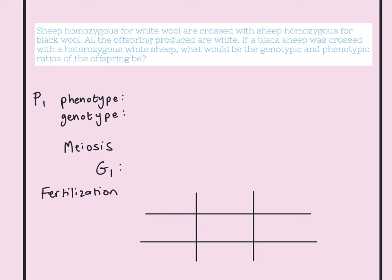All offspring from the cross of homozygous white wool and homozygous black wool are white — that is our first important clue. A white sheep crossed with a black sheep producing all white offspring tells you that white is the dominant colour. The offspring will be heterozygous, having one white allele and one black allele, but they still appear white in their phenotype. So white is the dominant trait.